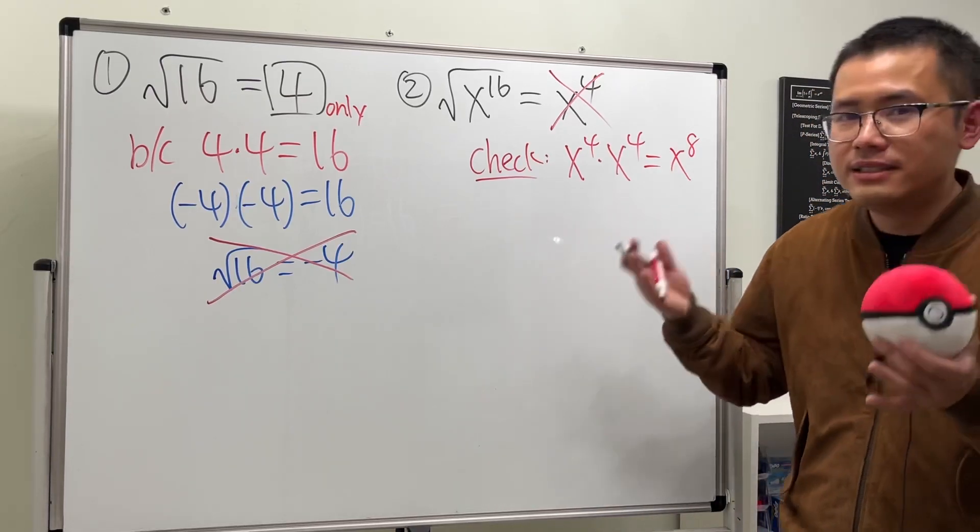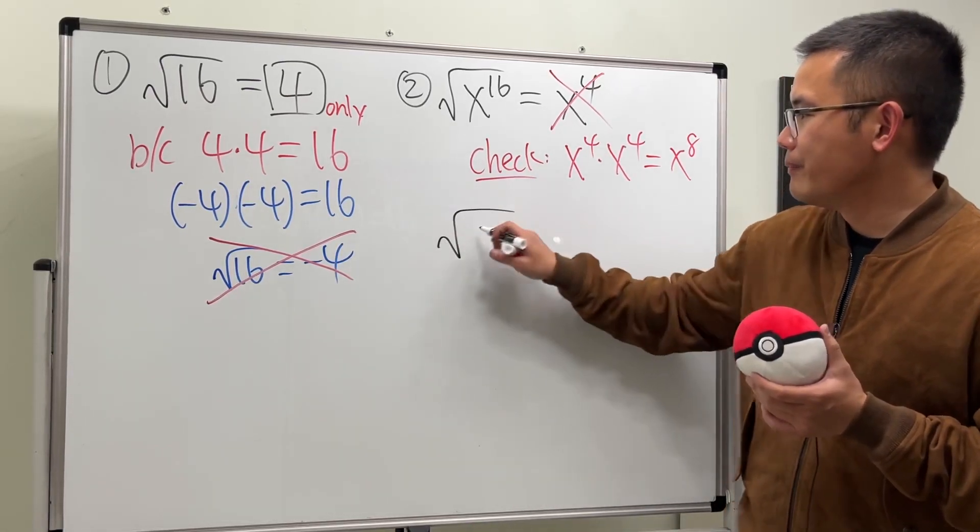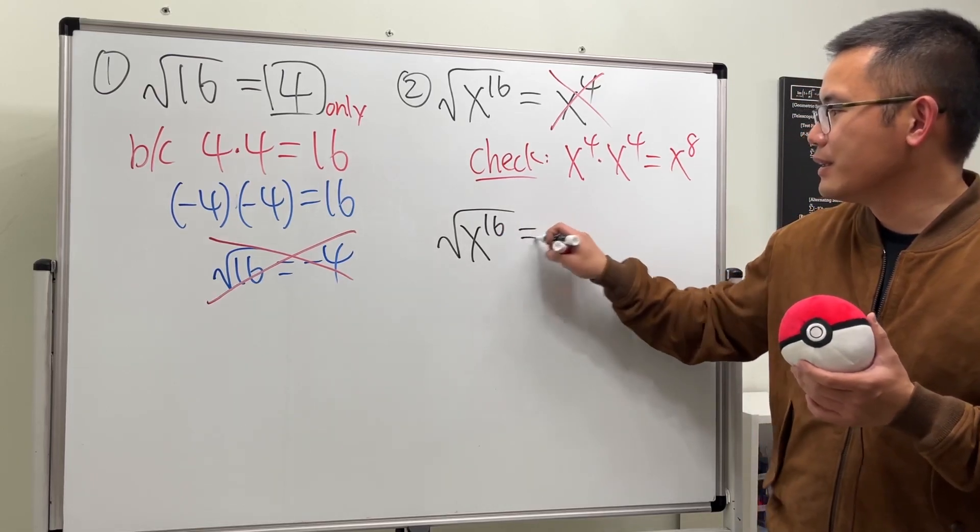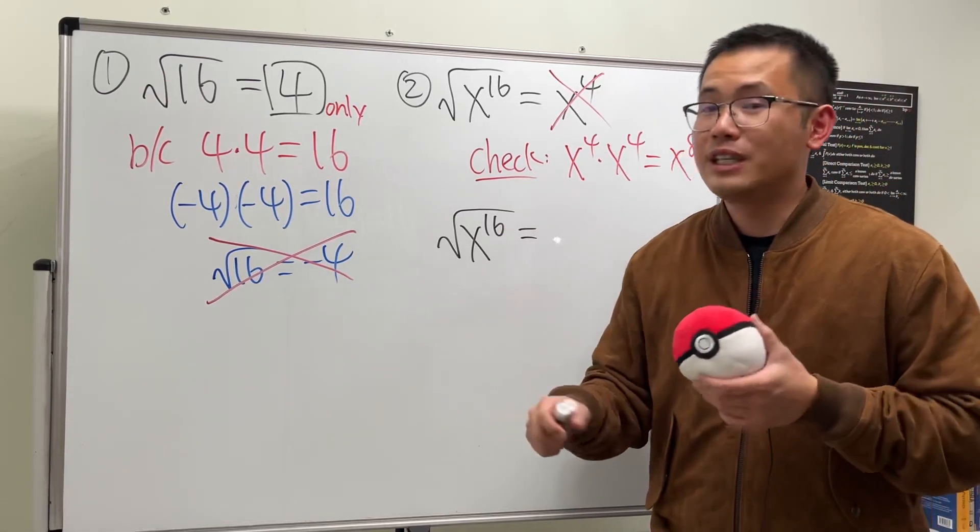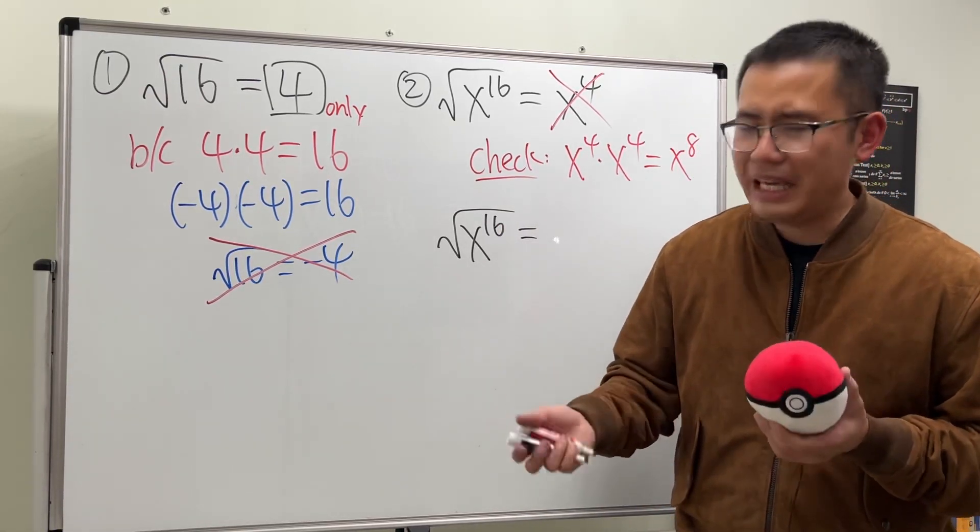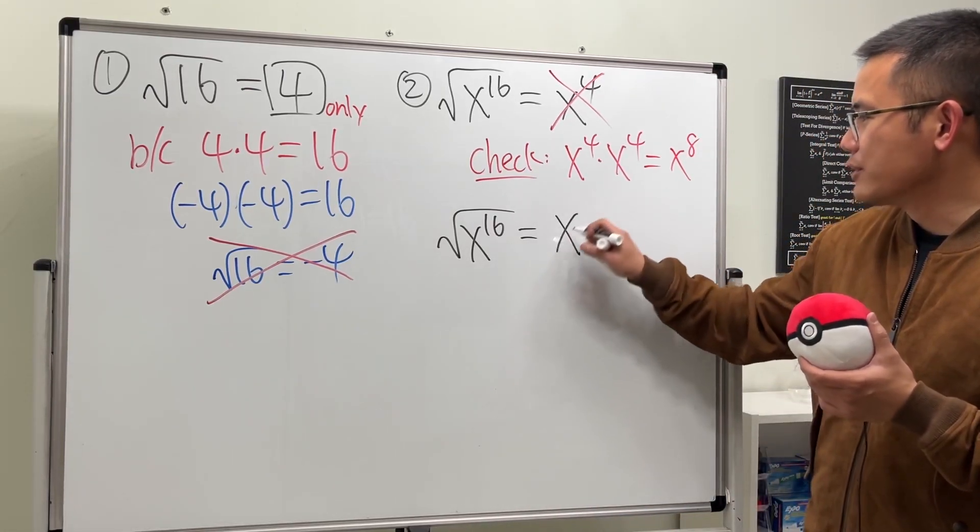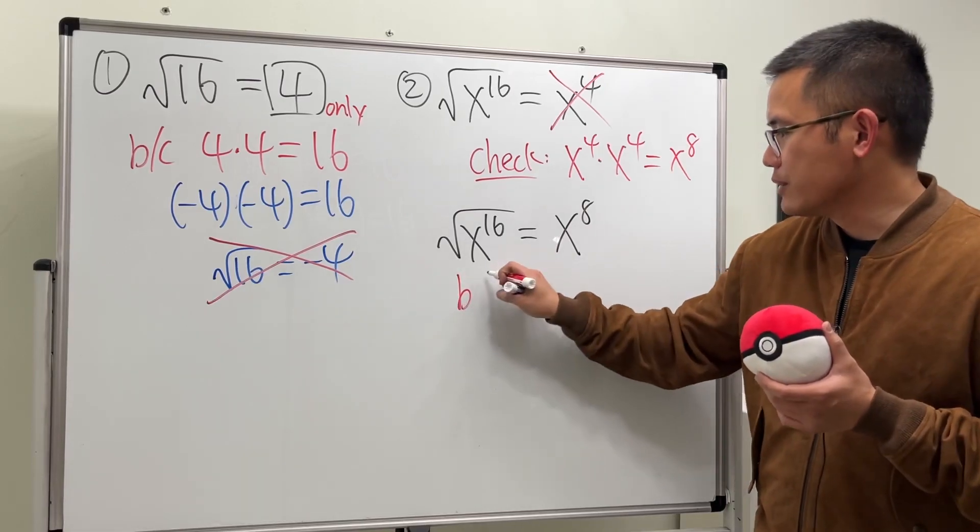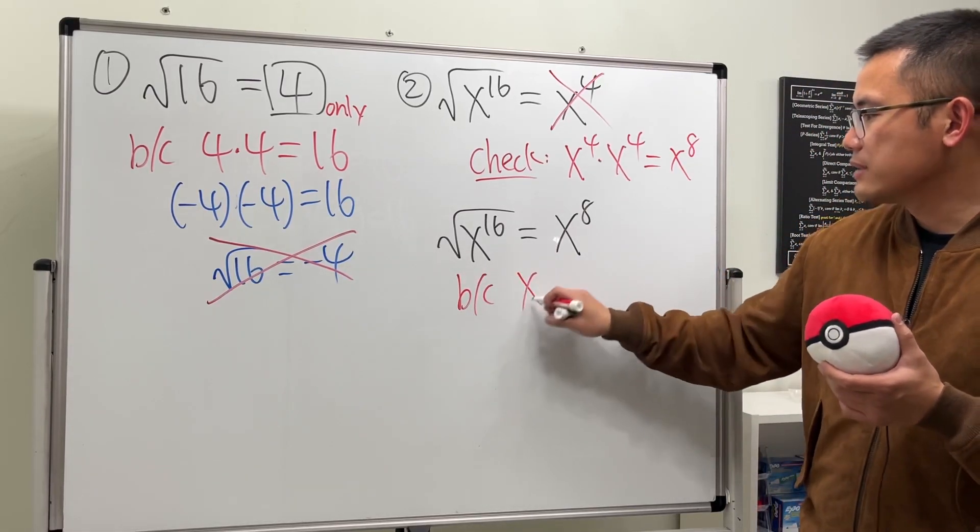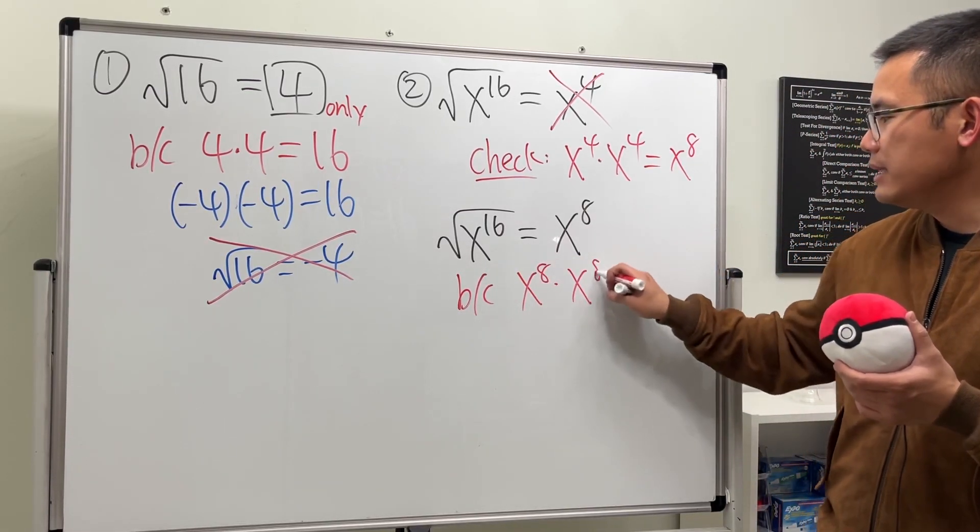So what is the answer though? Well, we will just have to think about what plus itself gives us 16. Eight—we'll just have to divide it by 2. So for this right here, the answer is actually just x to the 8. And I'll tell you why: because x to the 8 times x to the 8, we add them up, we do get the x to the 16.